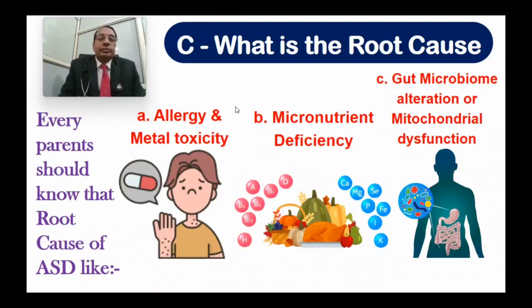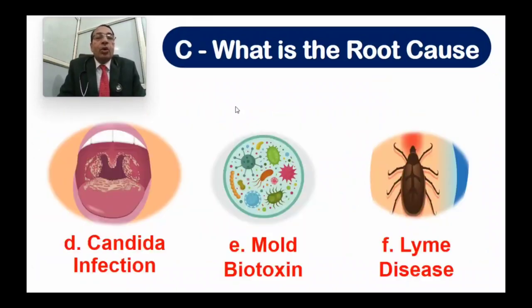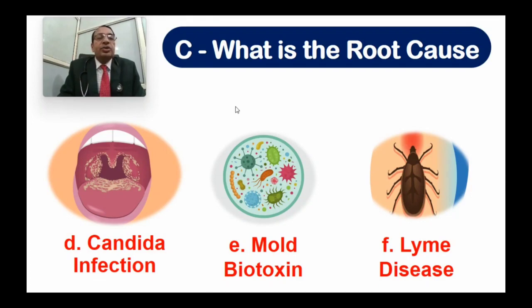In the same pattern, along with therapy you have to treat the root cause. Children with ASD may have allergies to gluten or casein, metal toxicity like cadmium, mercury, copper, lead, or aluminium, micronutrient deficiency like vitamin D, B12, B6, magnesium, calcium, omega-3 fatty acids, gut microbiome alteration, mitochondrial dysfunction, candida infection, mold biotoxin, or Lyme disease.